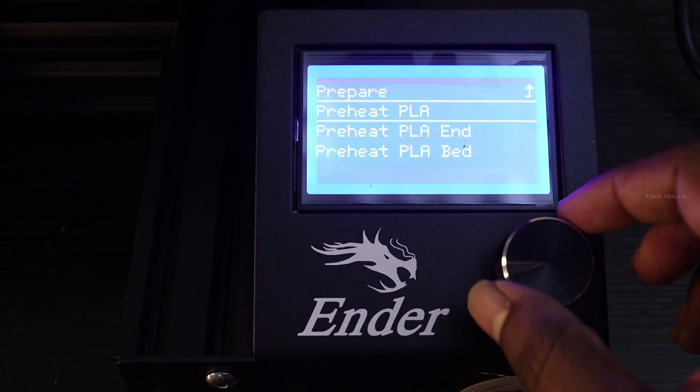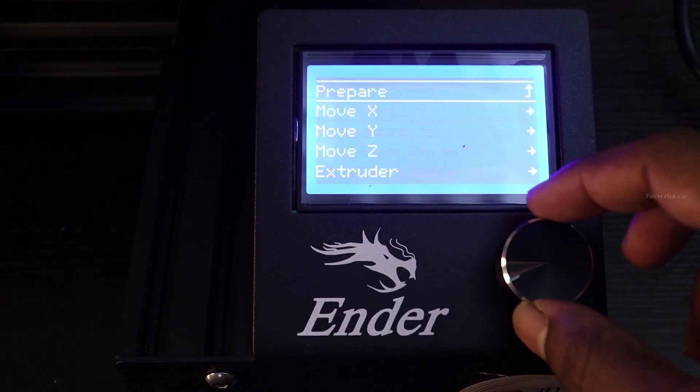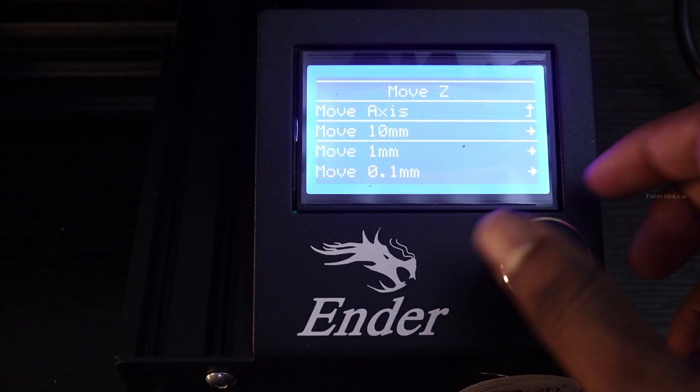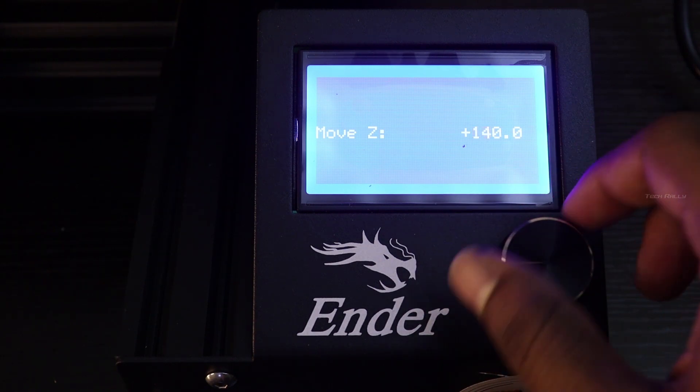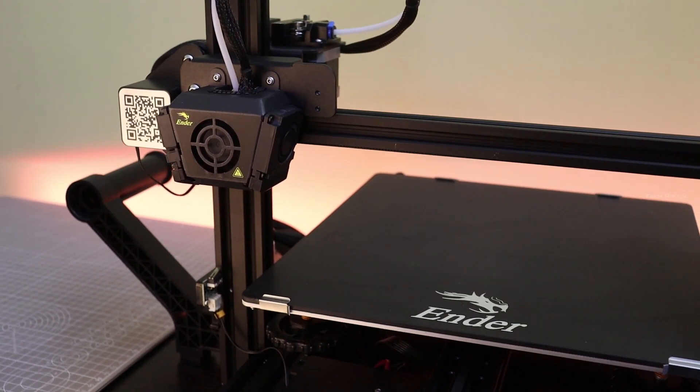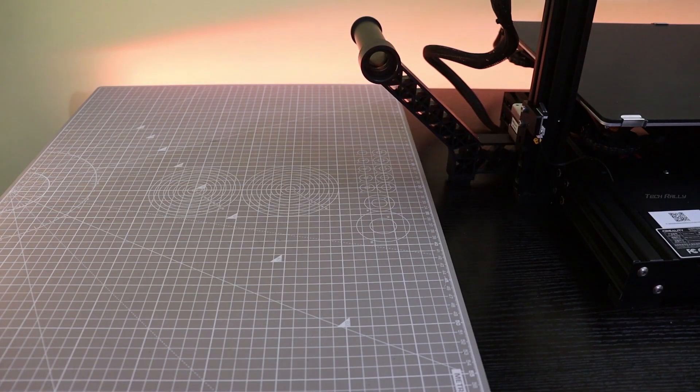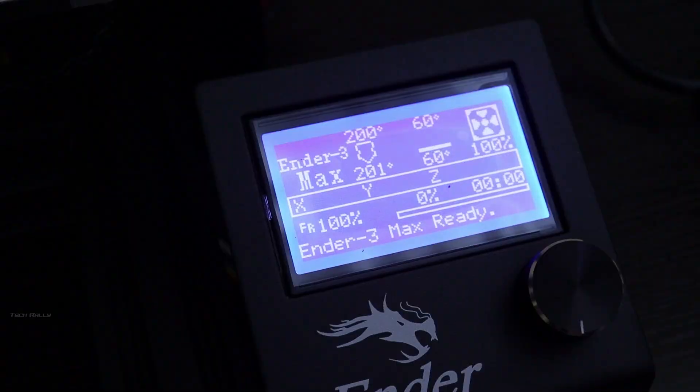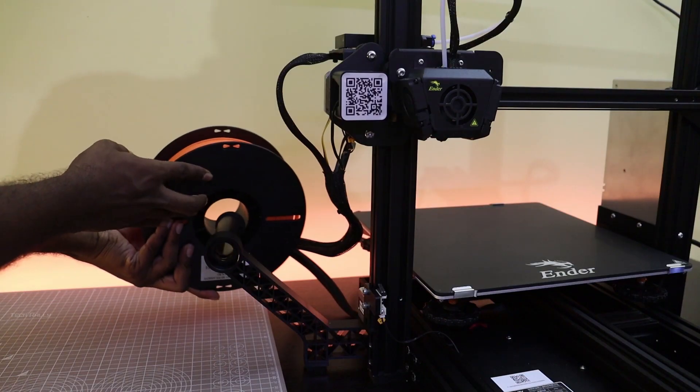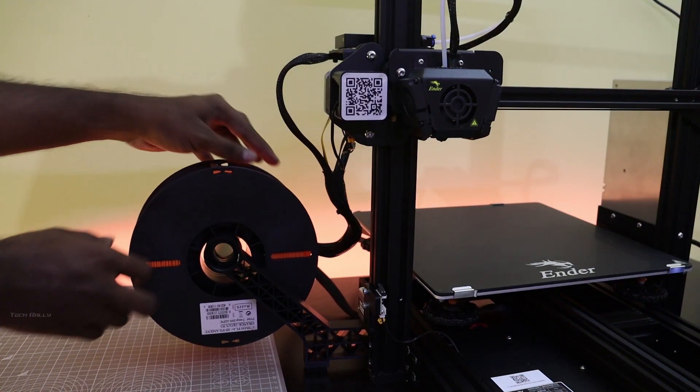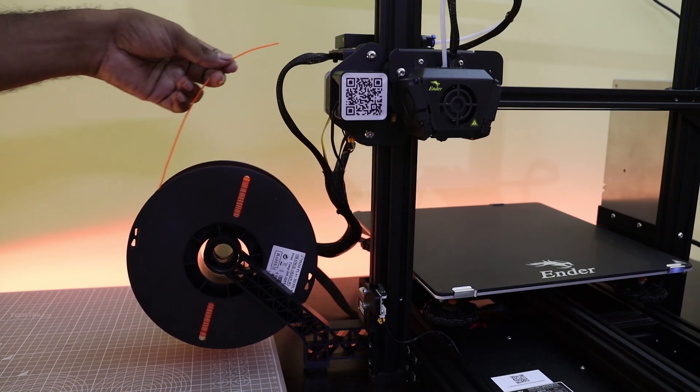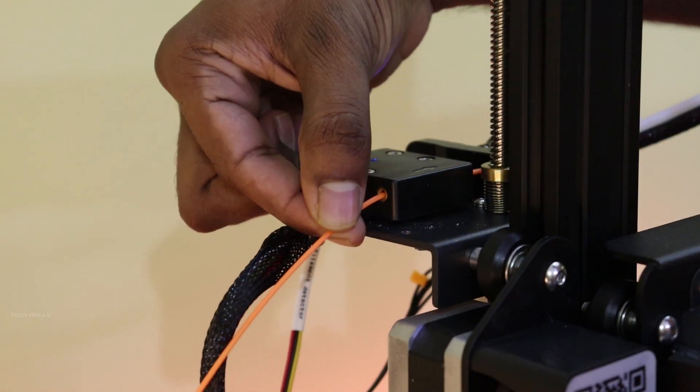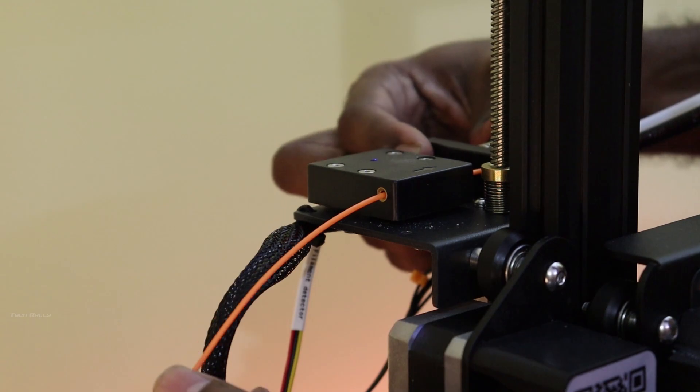To insert the filament, preheat the nozzle and move the z-axis upwards. I am using the Eason PLA filament. Once the nozzle is preheated, insert the filament into the extruder until the filament comes out from the nozzle.